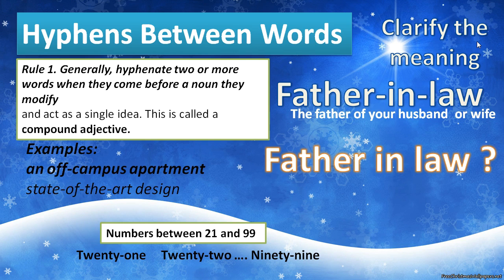Rule number one: generally hyphenate two or more words when they come before a noun they modify and act as a single idea — this is called a compound adjective. Examples: 'an off-campus apartment' — where 'off-campus' is the compound adjective — and 'state-of-the-art design.'